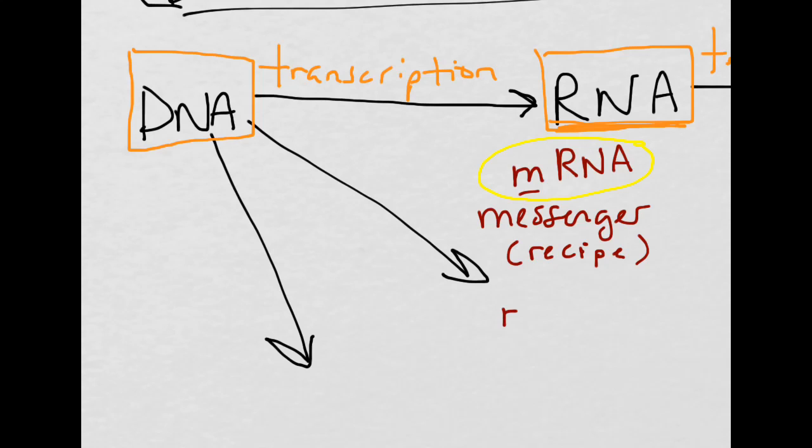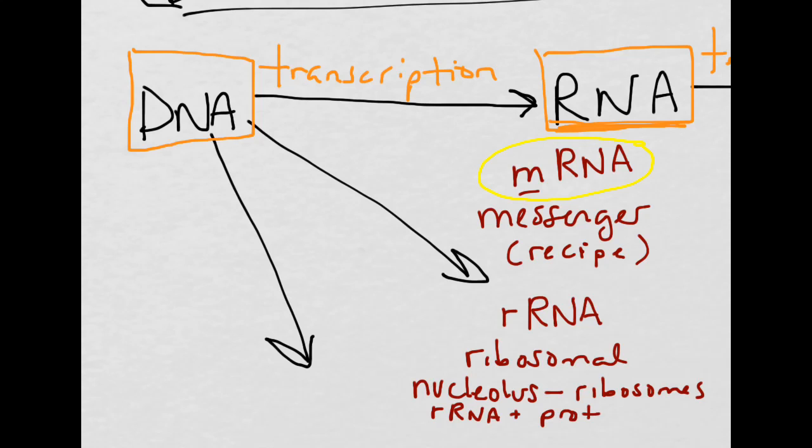So that's one kind of RNA. Notice I have two other arrows here, so there must be other types of RNA. We have rRNA, where the r stands for ribosomal. rRNA, ribosomal RNA, is a component of a ribosome. So we're going to find this in the nucleus. Remember in the nucleus, there's a clump of RNA and proteins called the nucleolus. And the nucleolus is like a ribosome factory. They are made up of rRNA and proteins.